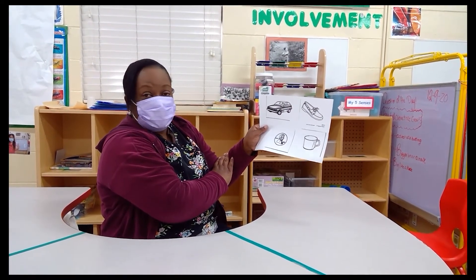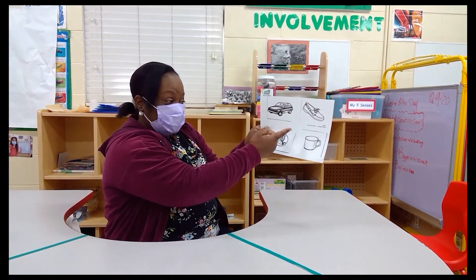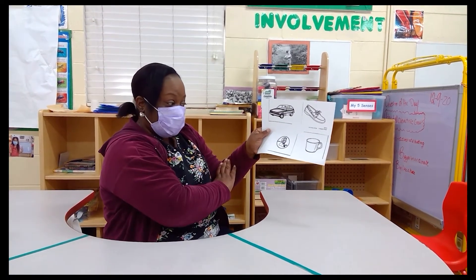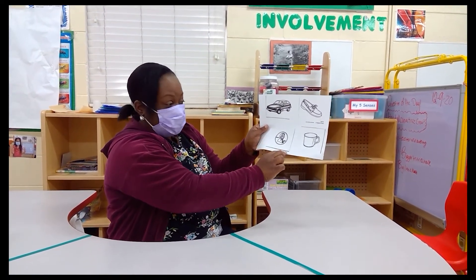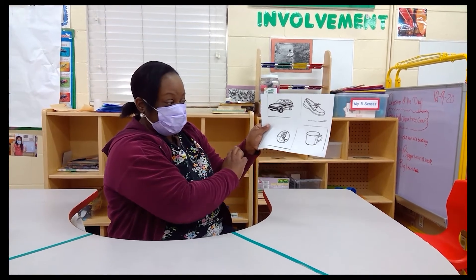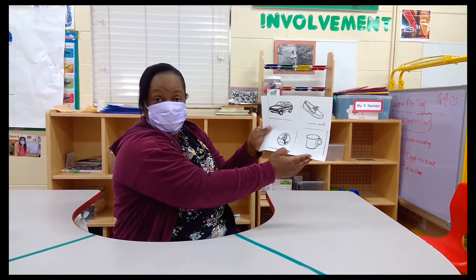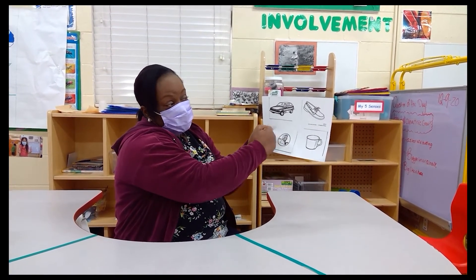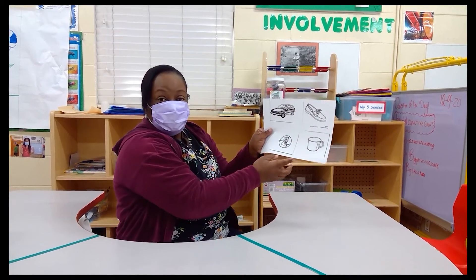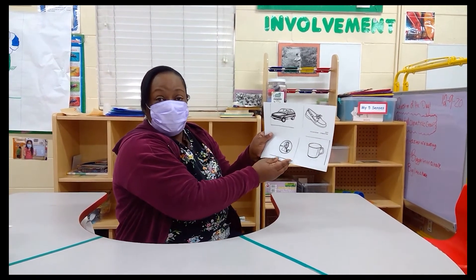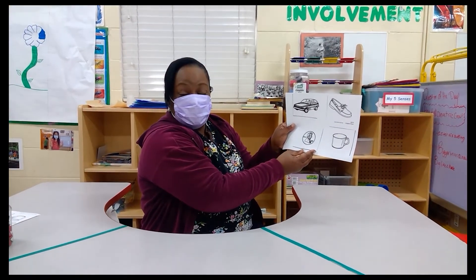And if the child is able to tell you we drive in a car, or we use the coin to buy stuff, we use the cup to drink out of, we use the shoes to wear — then your child is able to name four objects.